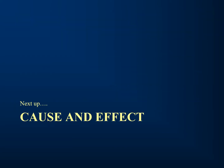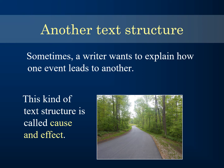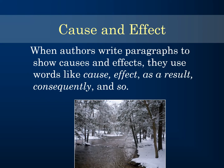Next up is cause and effect. Sometimes a writer wants to explain how one event leads to another. This kind of text structure is called cause and effect. When authors write paragraphs to show causes and effects, they use words like cause, effect, as a result, consequently, and so.